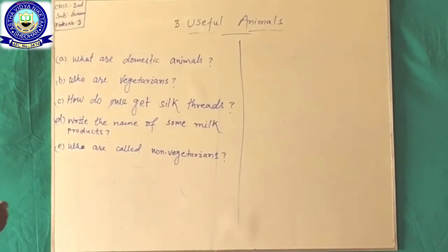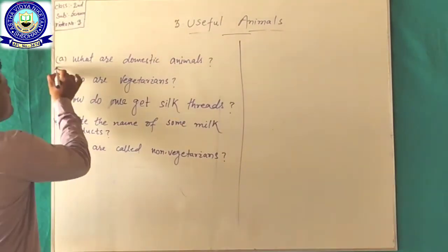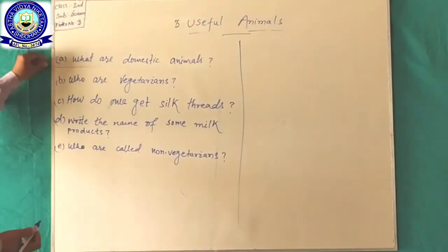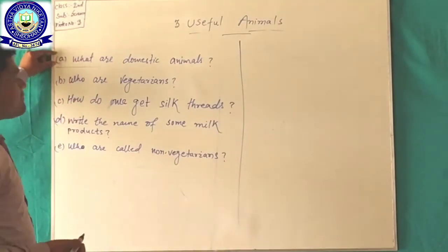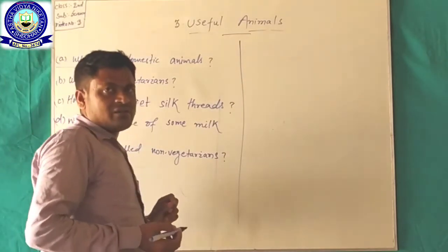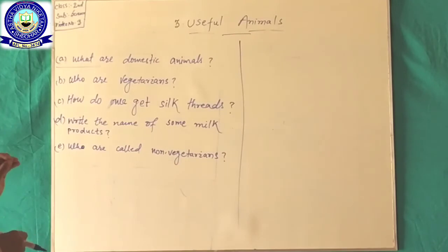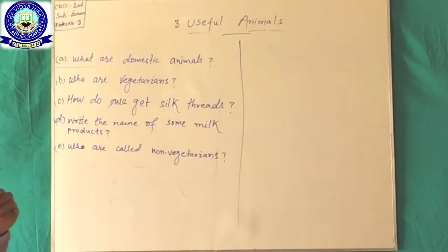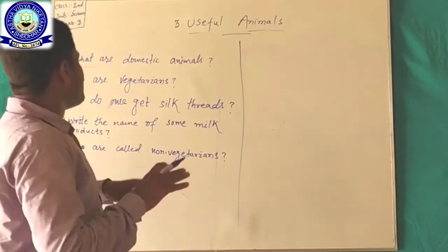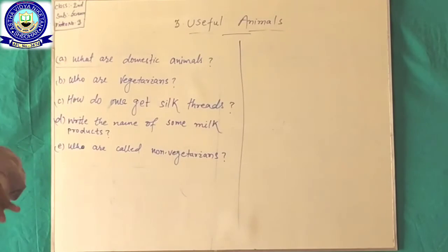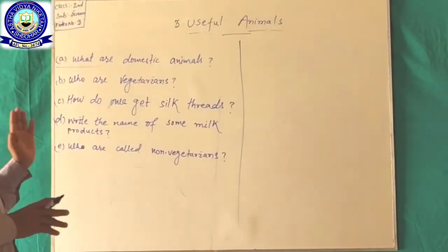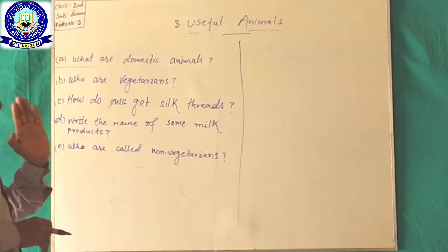Now, please look at the whiteboard and look at question number 1: What are domestic animals? Students, you already know about what domestic animals are, because in our previous video we deeply focused on domestic animals. I hope you all remember the definition of domestic animals. So you have to write what are domestic animals.